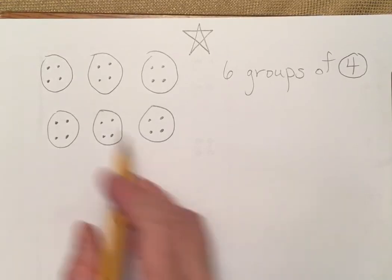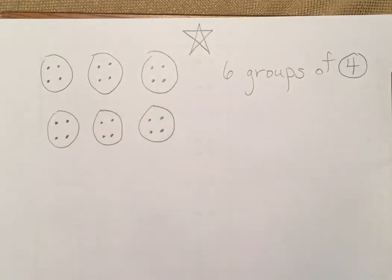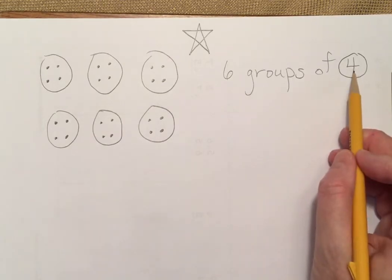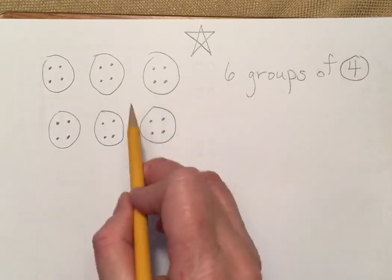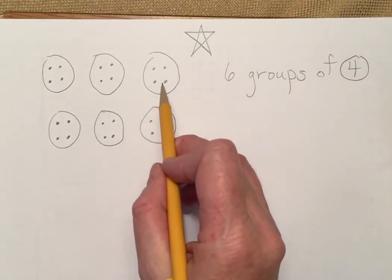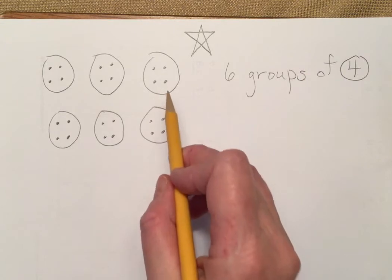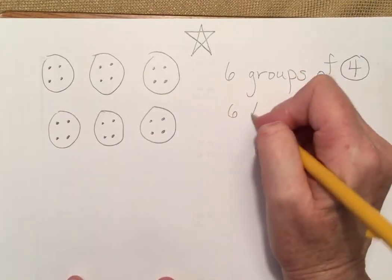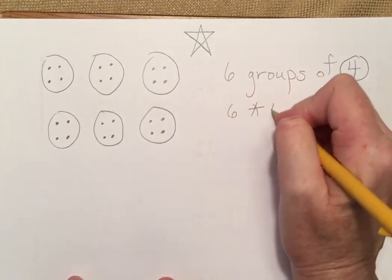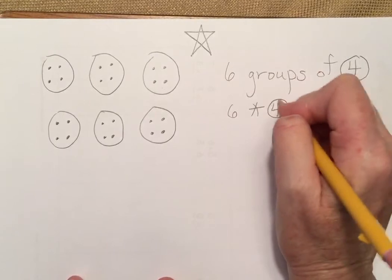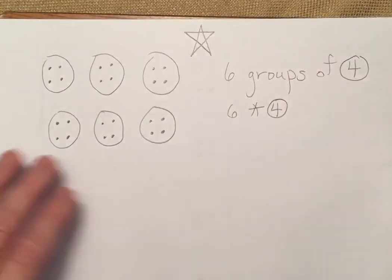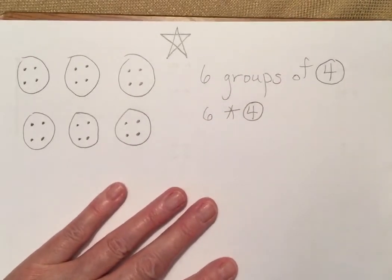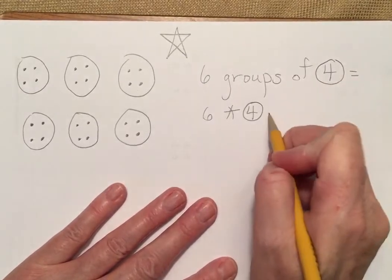I'm going to do the dots because I'm a little bit lazy. Think about why I circled that four — because that's how many are in each group. Six groups of four, and we want to find the quantity, the product.